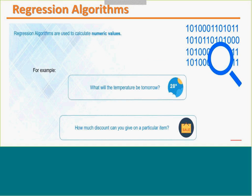Regression algorithm is about calculating numeric values. If someone asks what the temperature will be tomorrow — that's a numeric value, so use regression. We can also calculate how much discount to give on a particular item during a sale so that profit is not badly impacted. For those kinds of scenarios, go for regression.